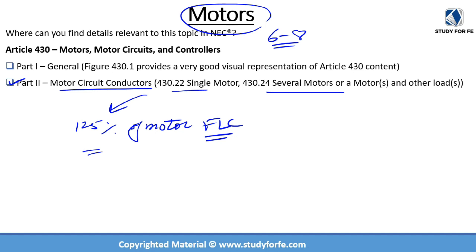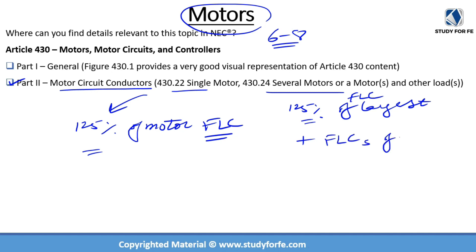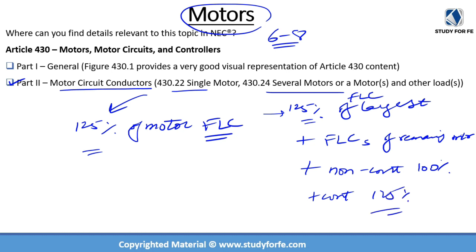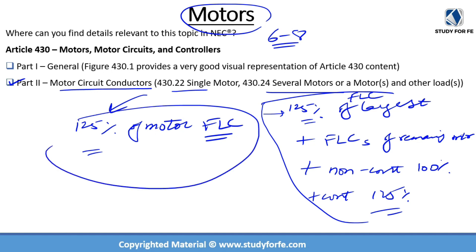Motor FLC — motor full load current — is very important and will come up several times in this lecture. When dealing with several motors, you apply 125% of the FLC of the largest motor, plus the FLCs of the remaining motors. If you have a combination of motors and other loads, you still apply 125% of the largest motor FLC plus the remaining motor FLCs, then add 100% of non-continuous load ratings and 125% of continuous load ratings. This is how we size conductors — it's something you will encounter quite often as a power systems engineer.